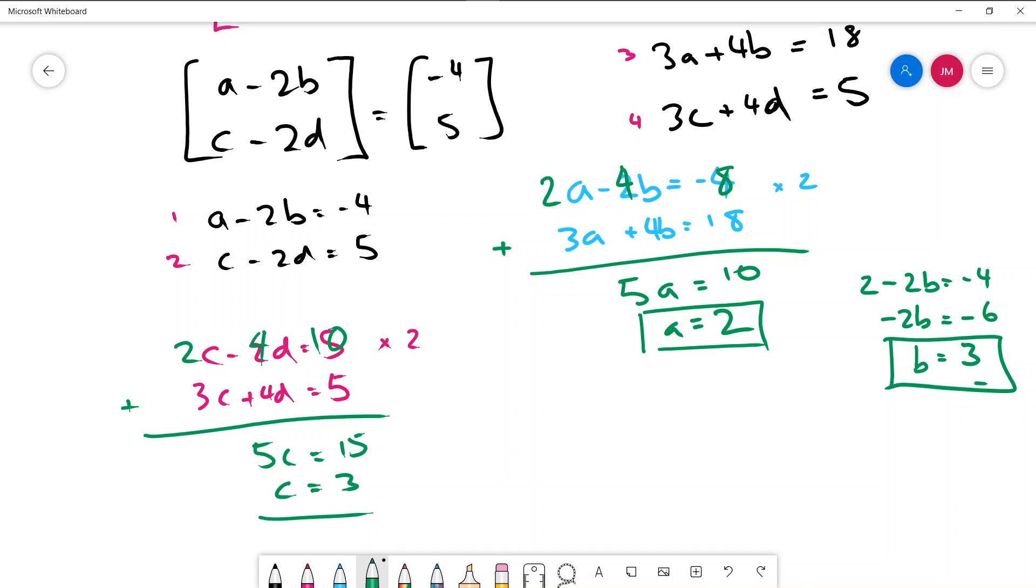And then we're going to sub that one into either equation 2 or 4. Equation 2, let's do that. So we'd have 3 minus 2D equals 5. Minus the 3 across. I get negative 2D equals 2. So D equals negative 1.